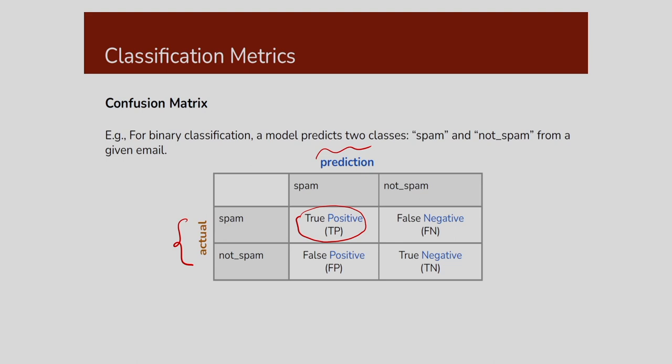Another class is not spam. How many times is not spam recognized as spam? That is nothing but the false positive. And how many times is not spam recognized as not spam? That is the true negative. So we are determining all these parameters — true positive, false positive, false negative, and true negative. This is the confusion matrix: how many times a particular class is correctly recognized and how many times it is not correctly recognized.